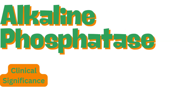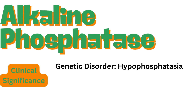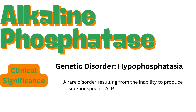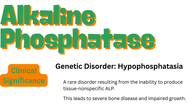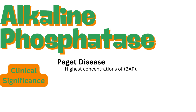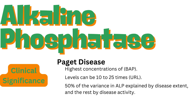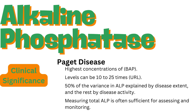Clinical significance — Genetic Disorder: Hypophosphatasia is a rare disorder resulting from the inability to produce tissue non-specific ALP, leading to severe bone disease and impaired growth. Paget disease is characterized by the highest concentrations of bone alkaline phosphatase (BAP); levels can be 10 to 25 times the upper reference limit. 50% of the variance in ALP levels is explained by disease extent, and the rest by disease activity. Measuring total ALP is often sufficient for assessing bone turnover and monitoring Paget disease.